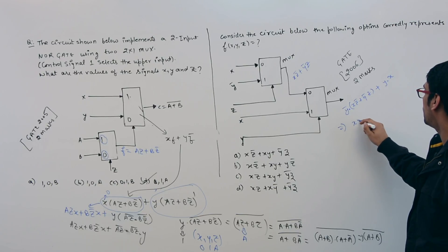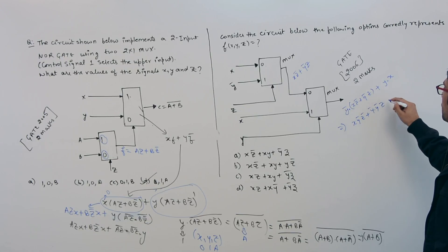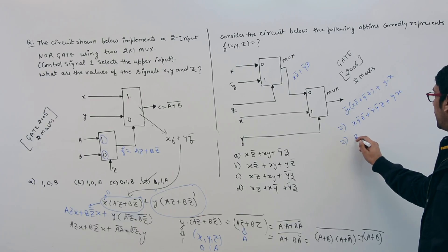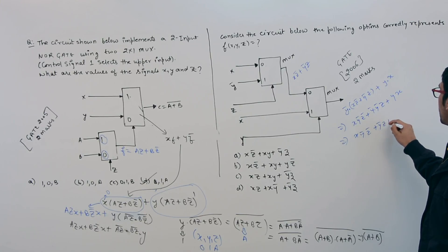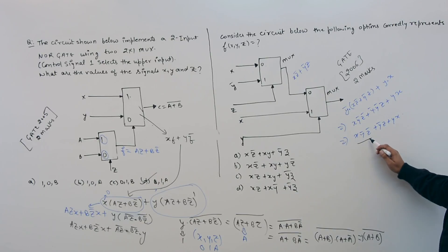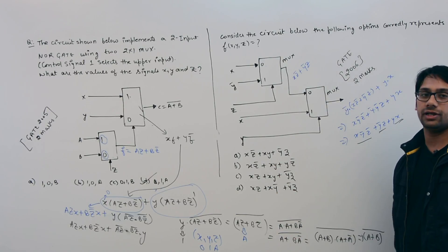Expanding this, we get X·Y complement·Z complement plus Y·Y complement plus Y·X, which simplifies to X·Y complement·Z complement plus Y complement·Z plus Y·X. Notice this first term has three literals while the other two terms have two literals each. Since all answer options contain only two-literal terms, we need to minimize one literal from this expression.